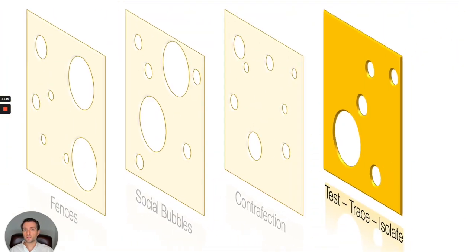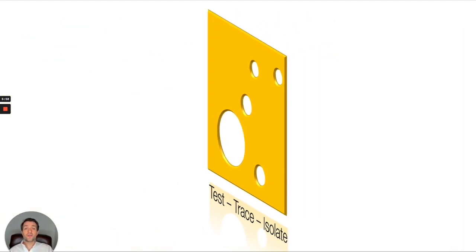And the fourth one is identifying cases and neutralizing them, and that is test, trace, isolate. Now this layer is a bit special because it's not made up of different layers or you can choose one layer or the other. No, you actually need to do all four things, and if you don't do all four things, it just doesn't work.